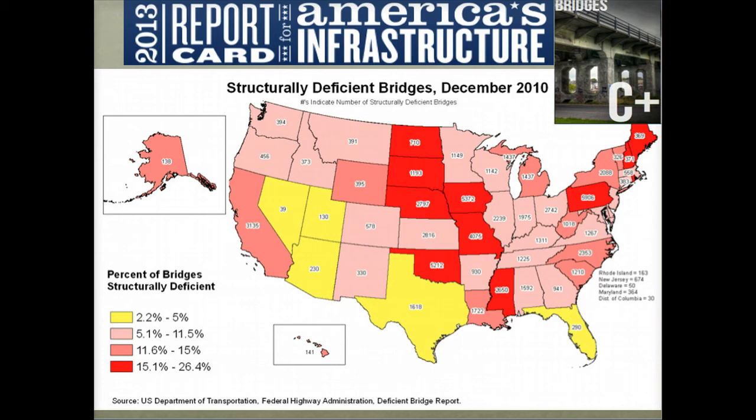The American Society of Civil Engineers gave the United States a C-plus for bridges in their 2013 report card, noting that in total, about 10% of the nation's bridges are rated as structurally deficient, while the average age of the nation's roughly 600,000 bridges is currently 42 years. To improve this, the government needs to invest $8 billion annually, in addition to the $13 billion it already spends on bridge maintenance and repair. Maine has one of the highest percentages of deficient bridges in the country.